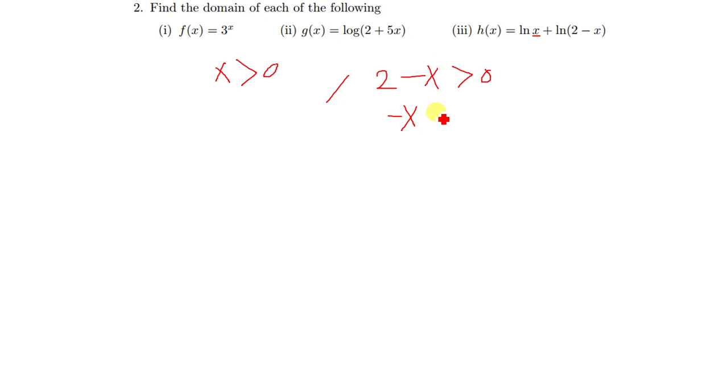We say negative x is going to be greater than negative 2. When you divide by negative there, the sign is going to change. So x is less than two. So we have x greater than zero and x less than two.